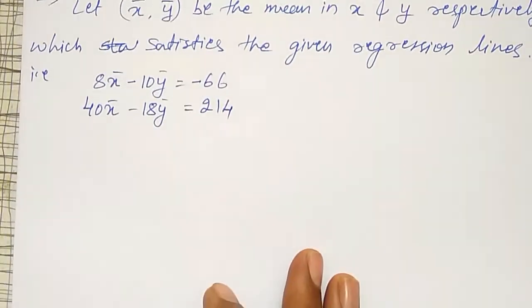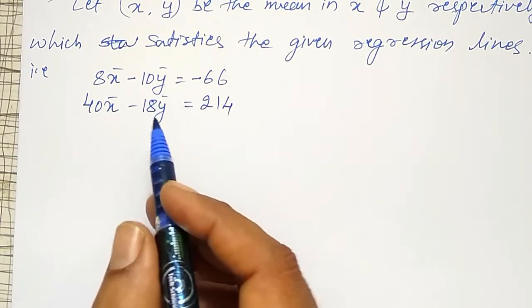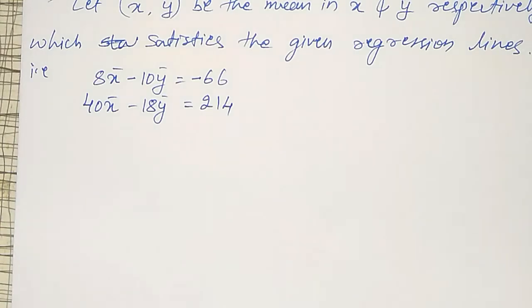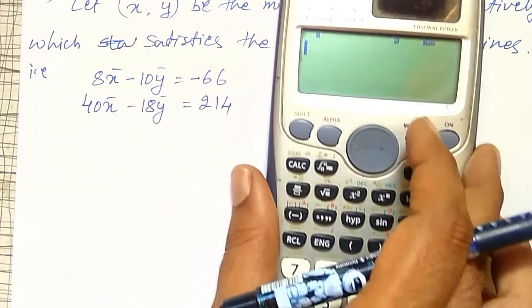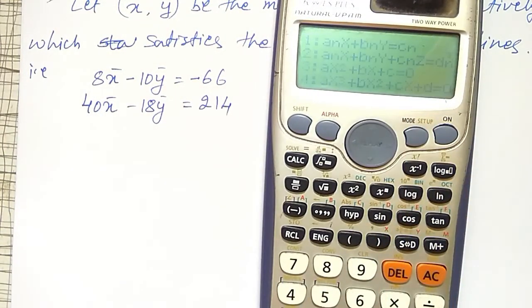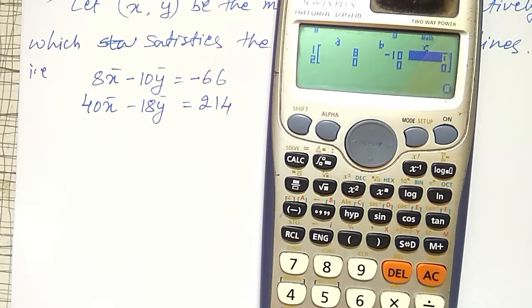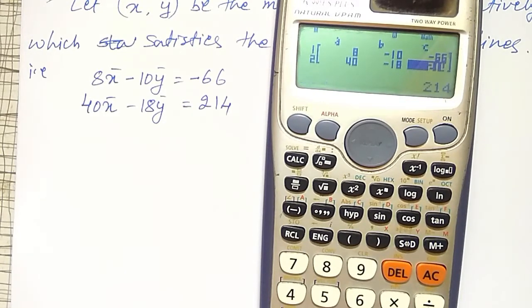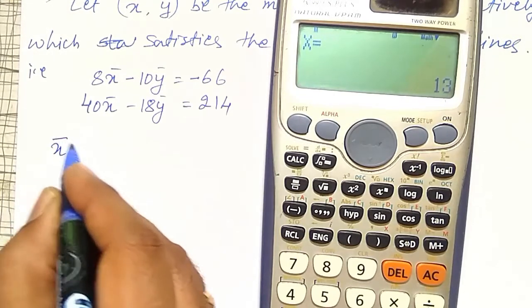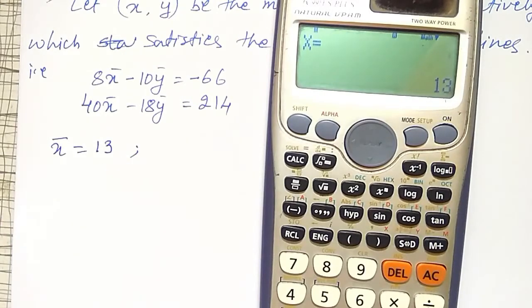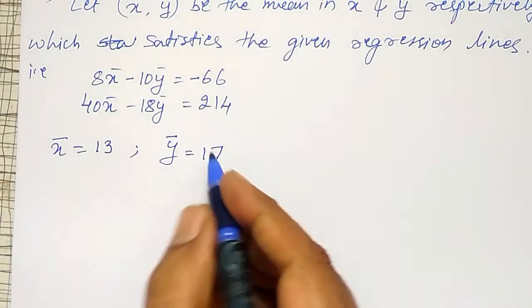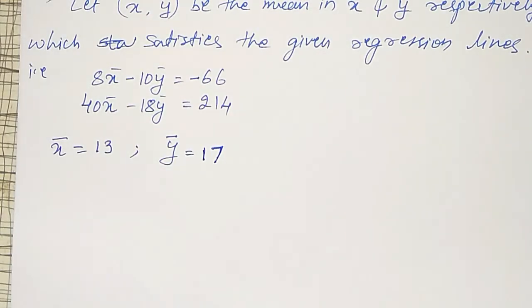As they are satisfying both the straight line equations, from these two I have to find out X bar and Y bar. These two are simultaneous equations and can be solved using the equation mode. Setting A = 8, −10, −66 for the first equation, and 40, −18, 214 for the second equation, I get X bar = 13 and Y bar = 17. So the mean in X is 13 and mean in Y is 17.